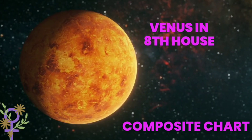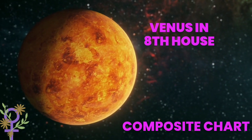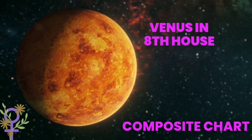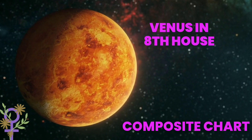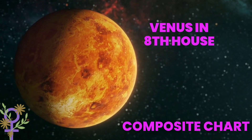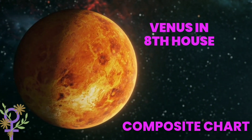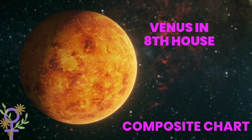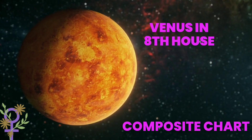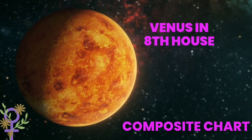A composite chart is basically a combination of two birth charts — the birth charts of the partners in a relationship. We look at their birth charts, add them together, find a midpoint, and this midpoint gives us a third chart. This third chart gives us a representation of the couple as if they were one person, so we no longer look at them individually.